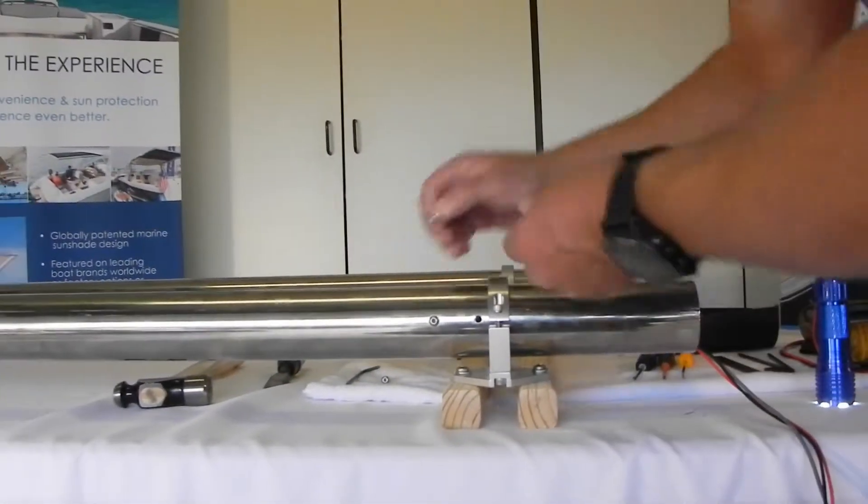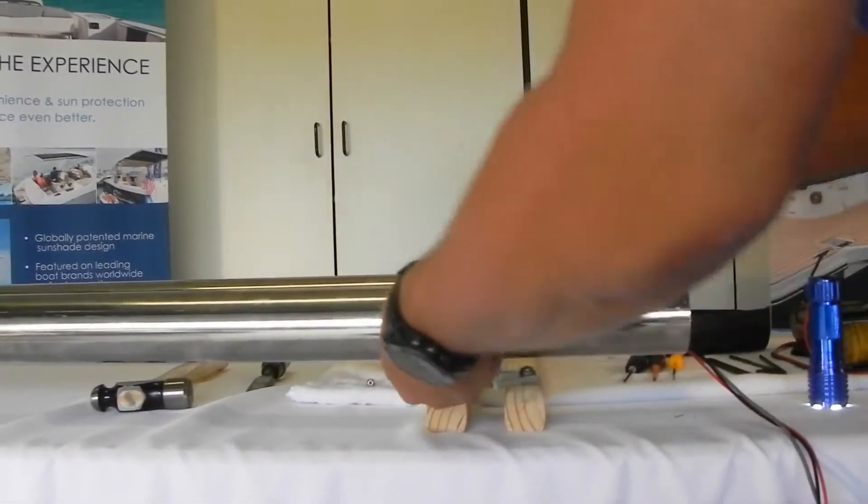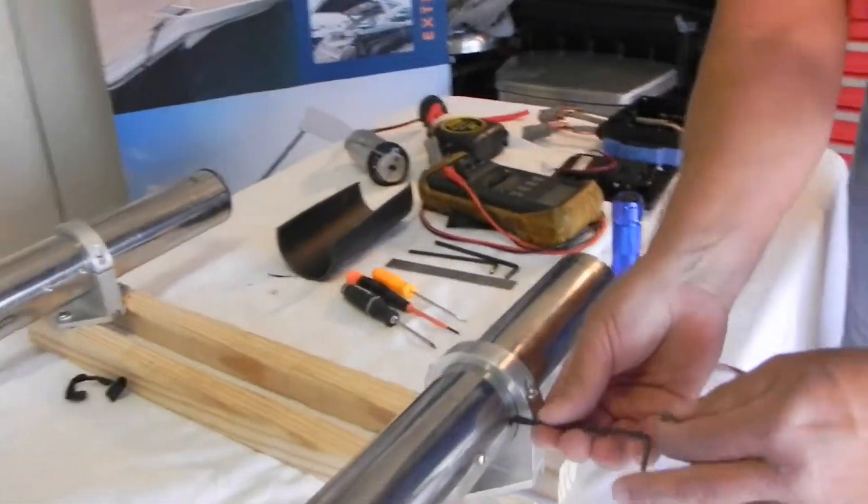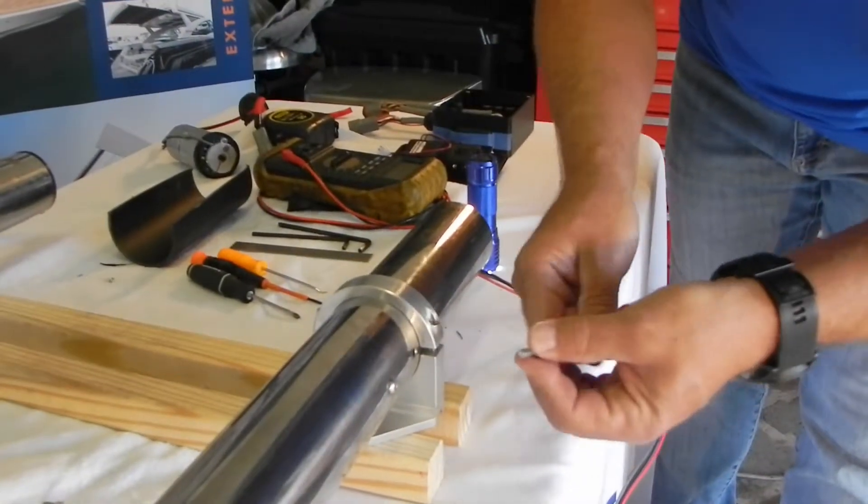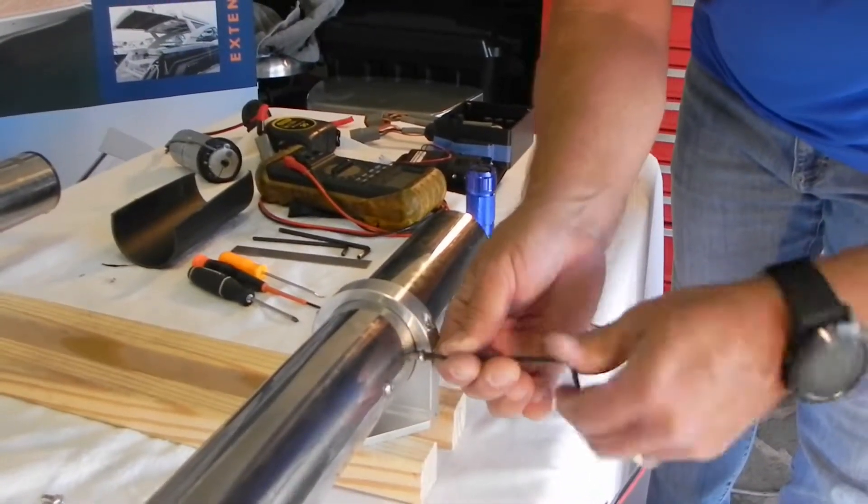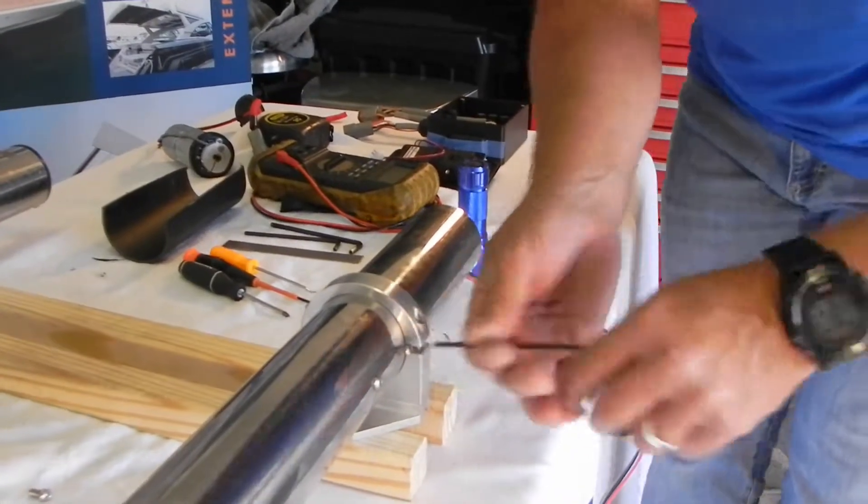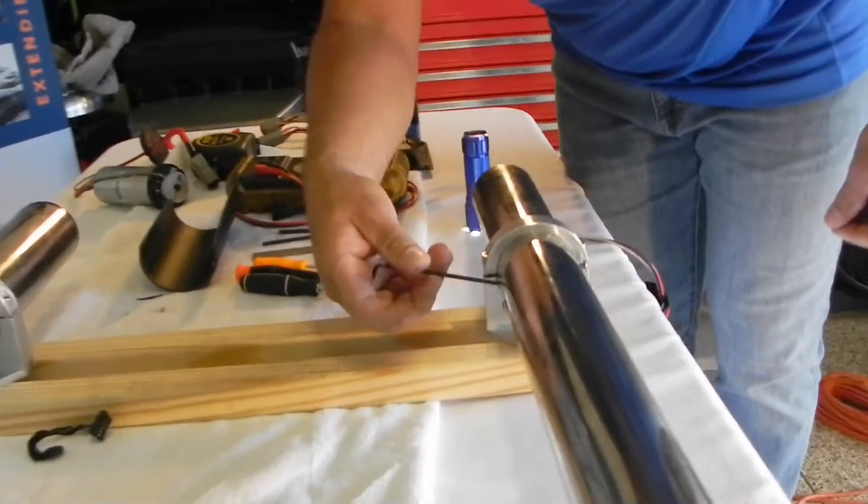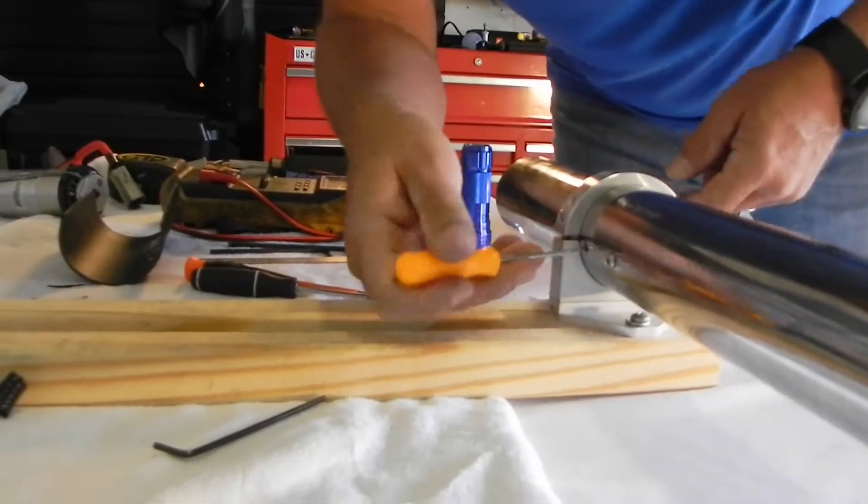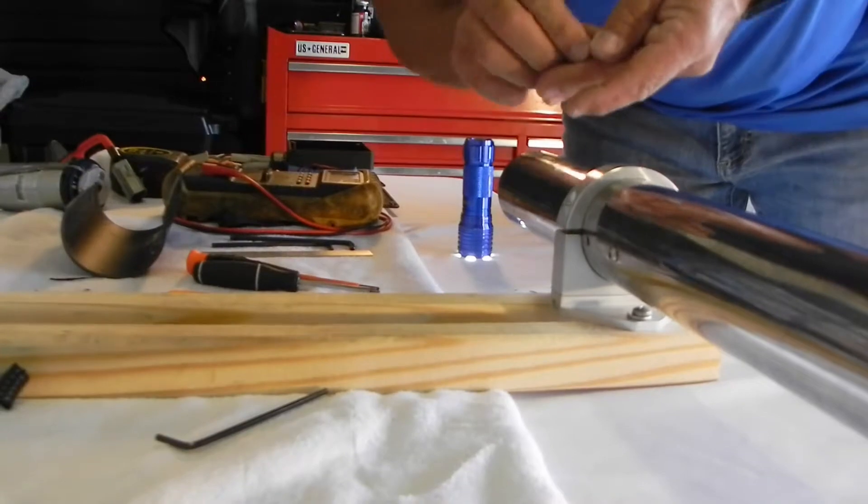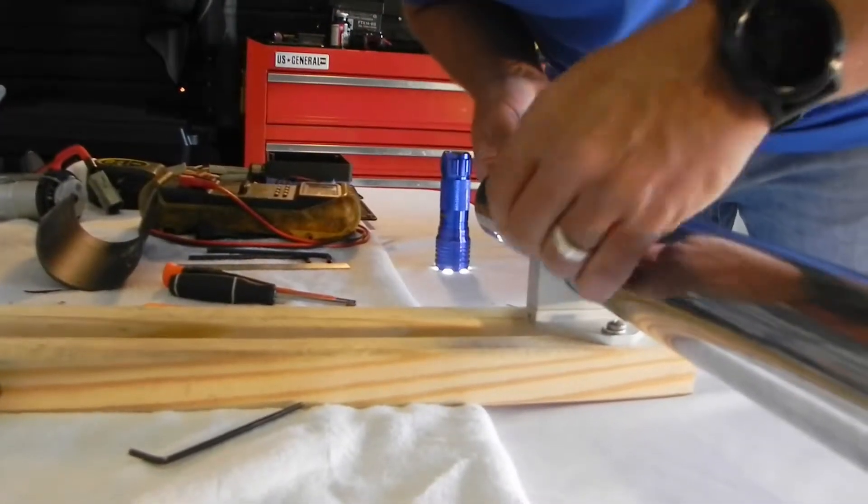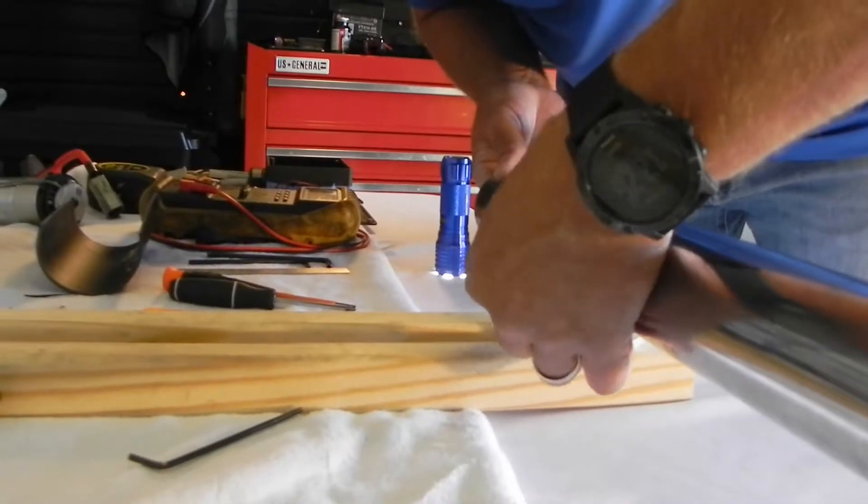So now what we're going to do is take our bolt or screw. Sometimes you might have to use it as a center. So you're going to center it up in the hole. Just get it started and then go to your other side. Get that one centered in the hole. And sometimes you have to pick the back of the motor up a little bit to get the holes to line up.